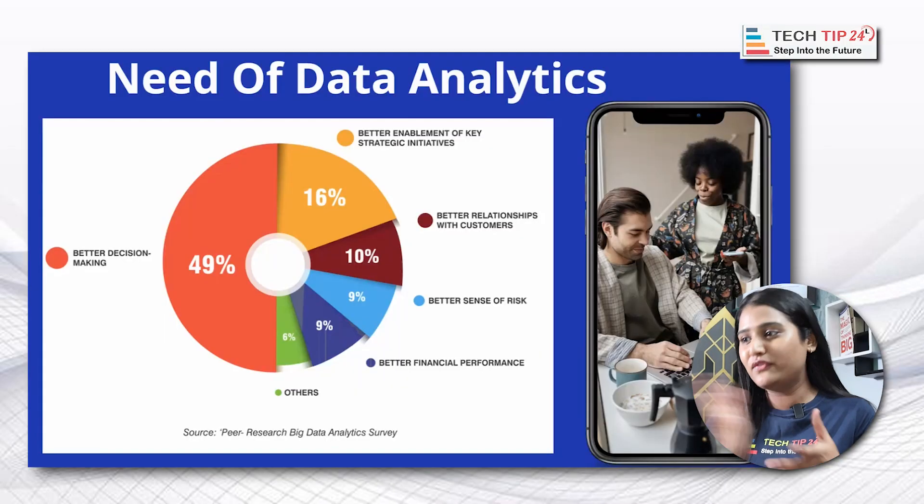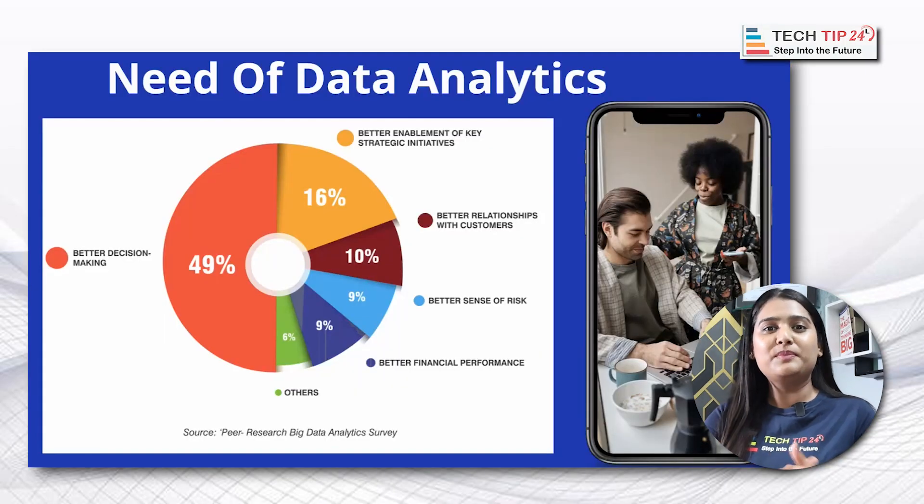Better relationships with customers is another benefit. For example, if a customer is buying the same product every week, we build a better relationship by sending predefined notifications. Just like Zomato sends notifications such as 'it's pizza time' or 'it's milk time,' and Blinkit does the same — they analyze what you order frequently and send relevant notifications.